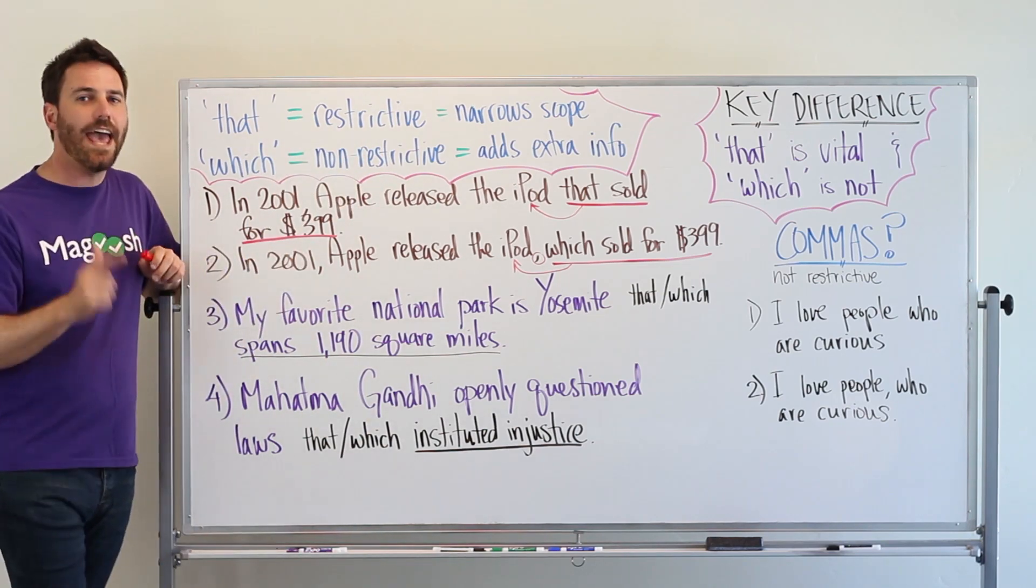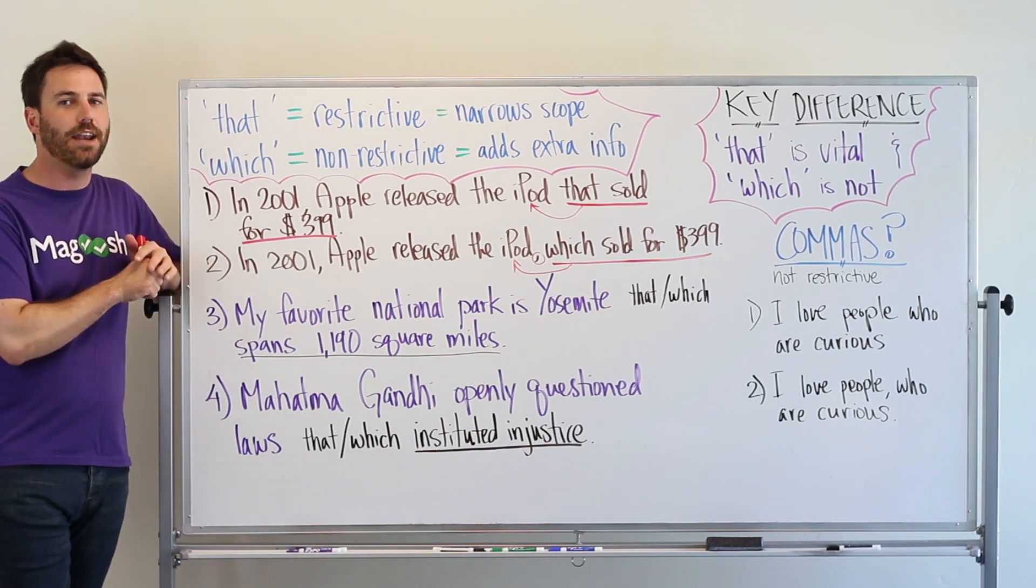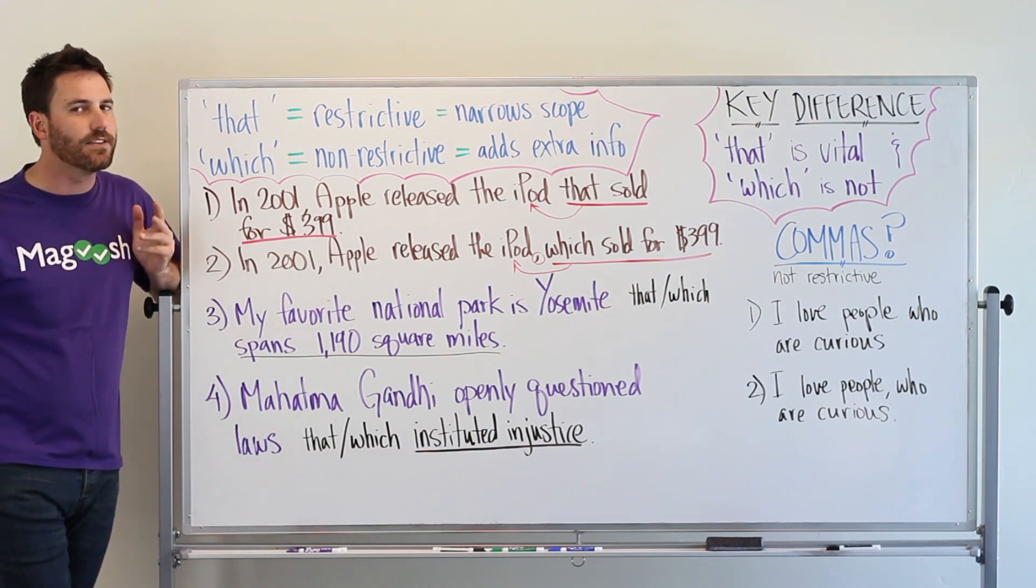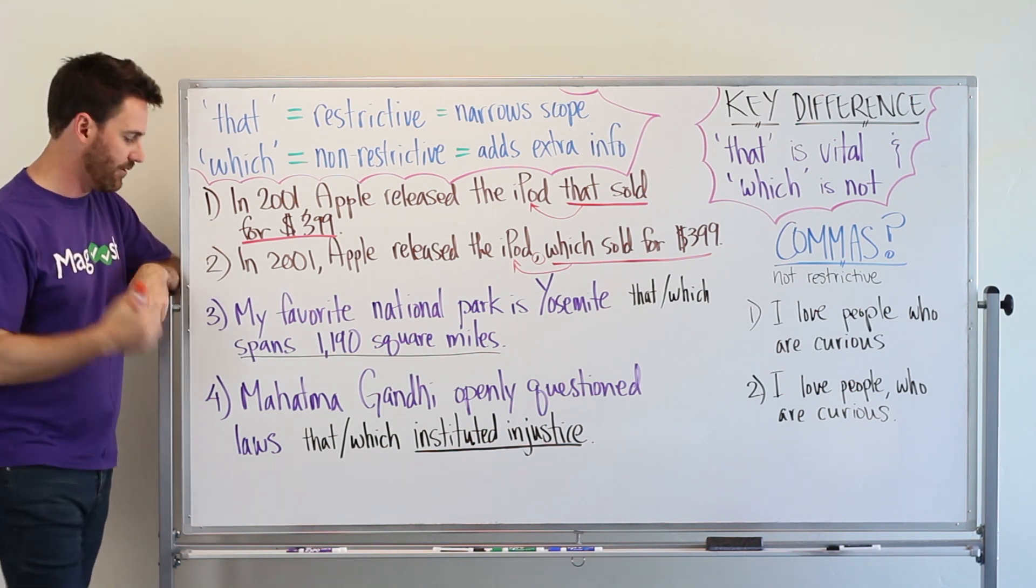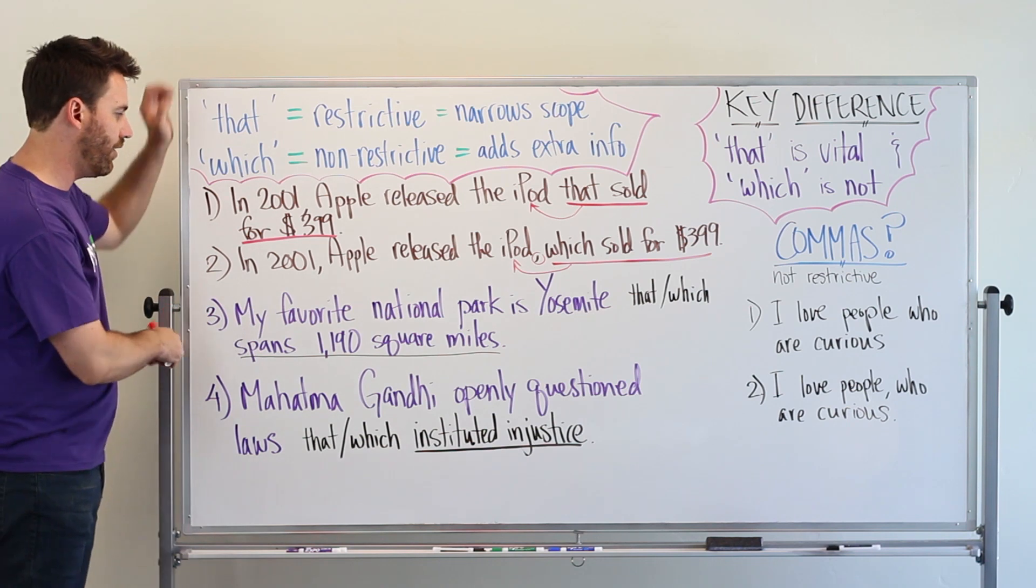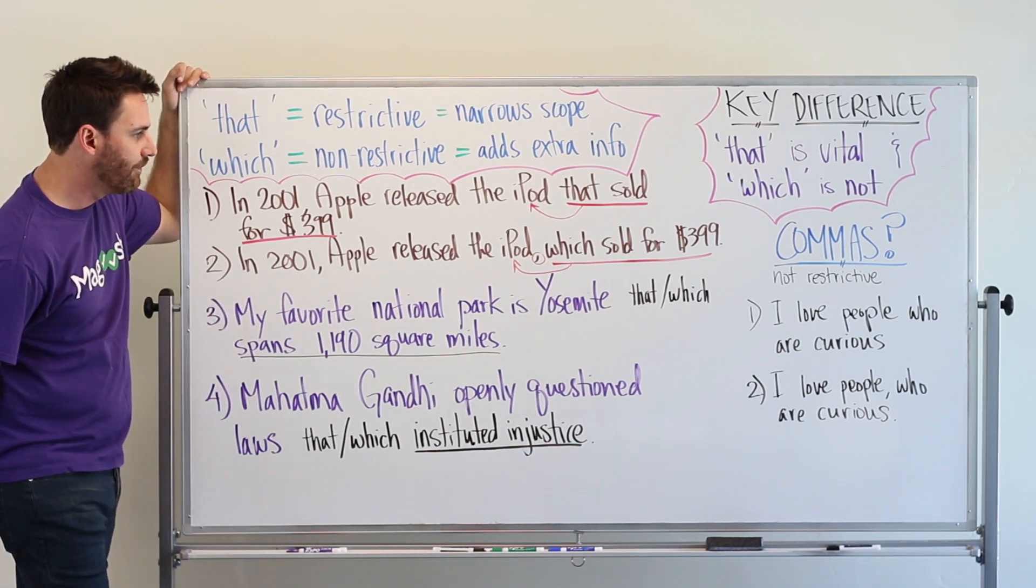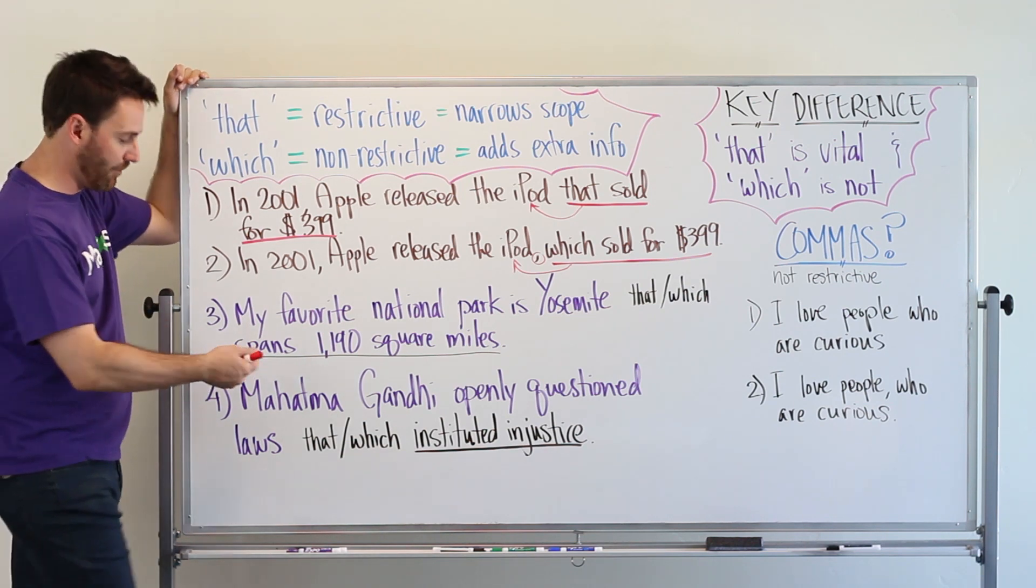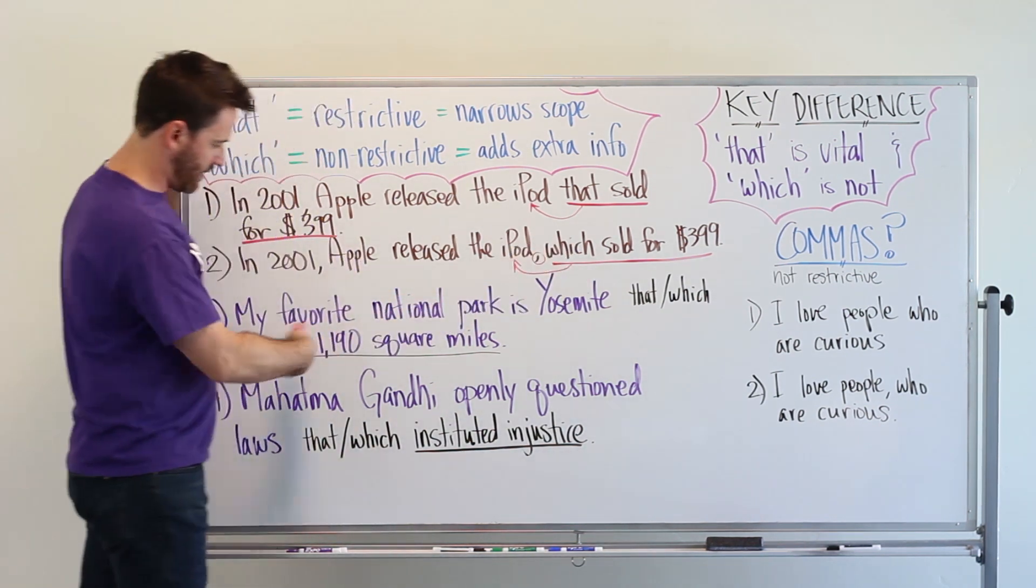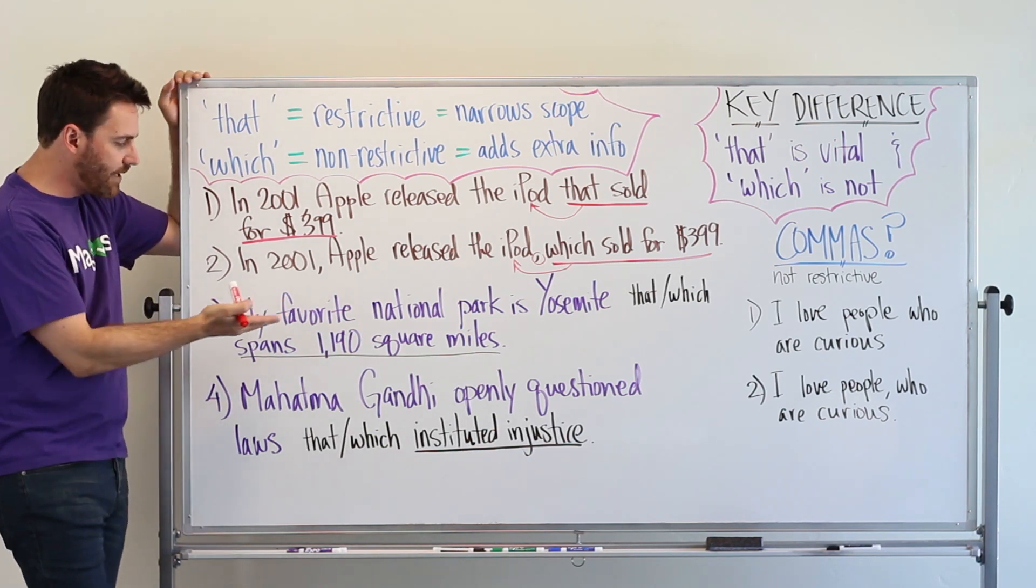A good way to test to see if you need the information or not is to just take it out of the sentence and see how the sentence sounds. So I have two examples down here. Number three, my favorite national park is Yosemite, period. So I'm going to leave out all the that which spans 1190 square miles. So does that make sense? Does this still hold up?